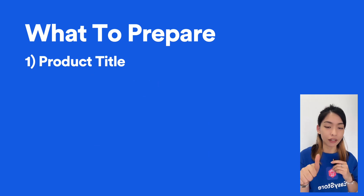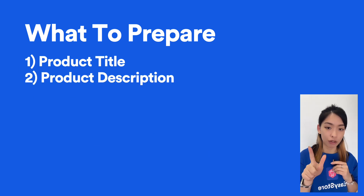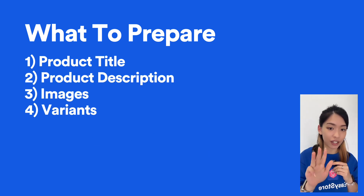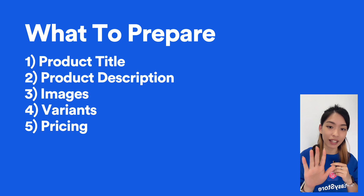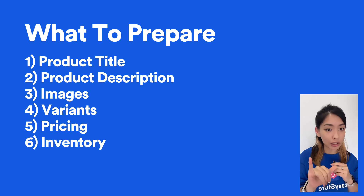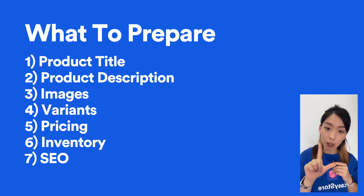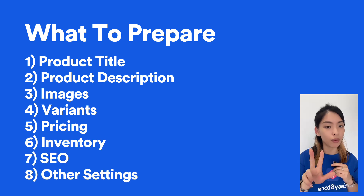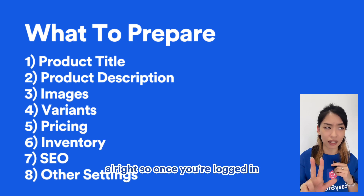So the first one will be product title, product description, images, variants, pricing, inventory, SEO optimization, and number eight will be other settings.